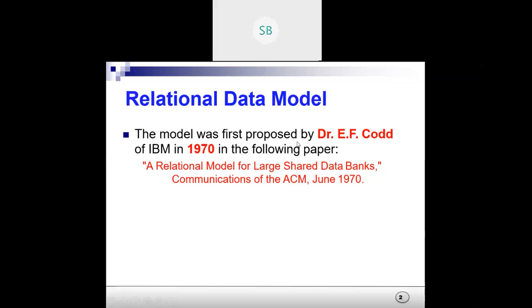Relational means, as I told you earlier, a relation consists of some rows and columns. It was first proposed in the year 1970 by Dr. E.F. Codd. This is a very important question — they ask in exams and interviews: who is the father of relational database, who first proposed this model. It is Dr. E.F. Codd. In his 1970 paper 'A Relational Model for Large Shared Data Banks' published in the ACM journal Communications of the ACM.